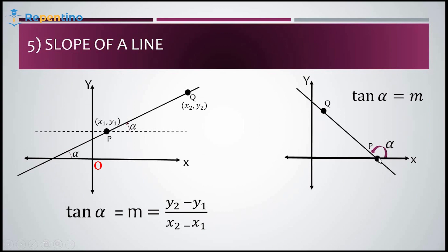Slope of a line: the line segment PQ is making an angle alpha with the positive direction of the x-axis. We define the slope as tan(alpha), which is denoted by m, and equals (y2 minus y1) / (x2 minus x1), where x1, y1 are the coordinates of P and x2, y2 are the coordinates of Q.